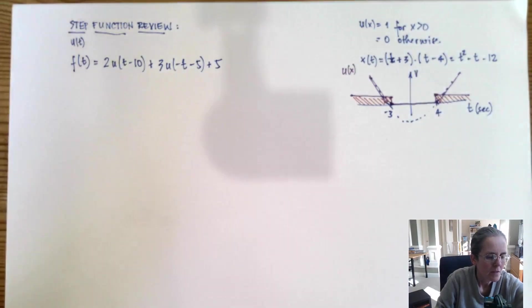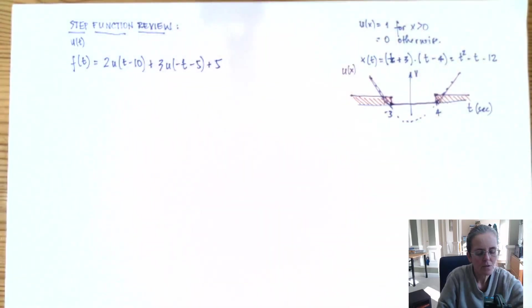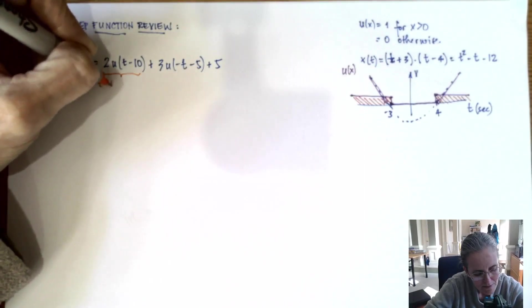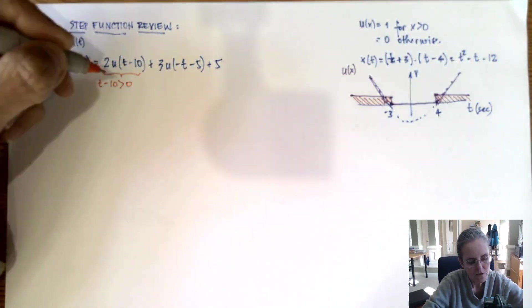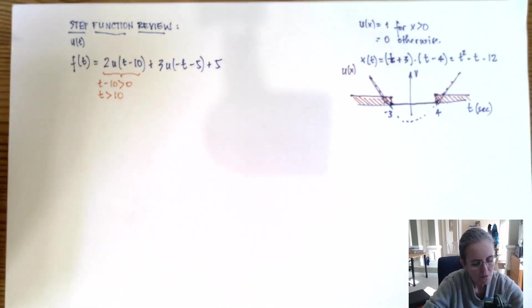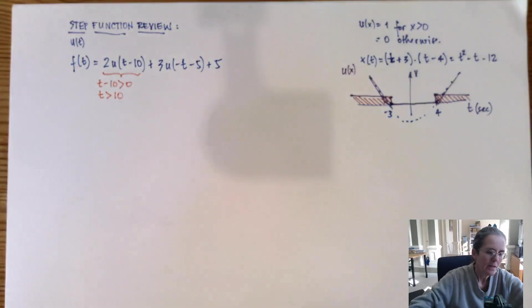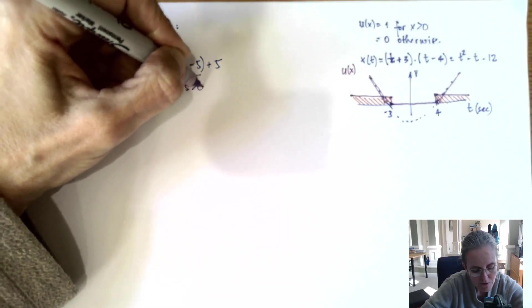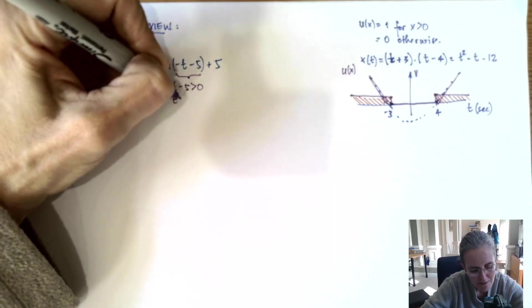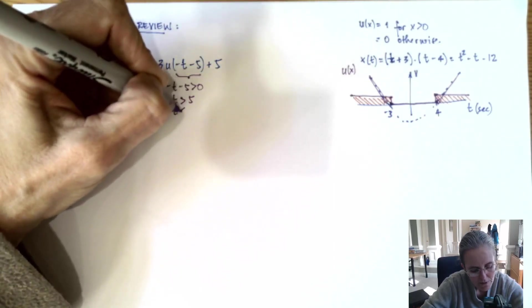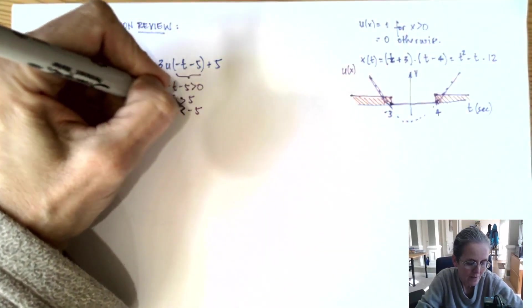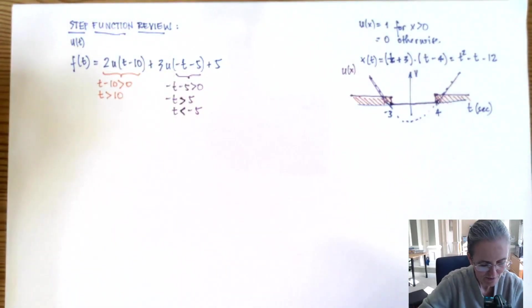What I do here is evaluate this one by one, dividing and conquering. For t minus 10, I want to know when it's larger than zero, which is when t is larger than 10. For the second one, I want to know when minus t minus 5 is larger than zero, which is when t is less than minus 5. When you switch signs, remember you have to switch the inequality. I hated this when I took this in school.